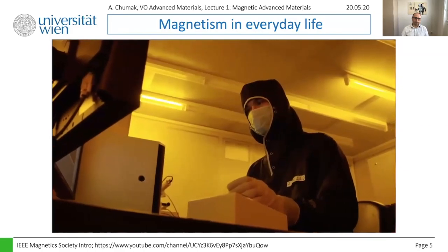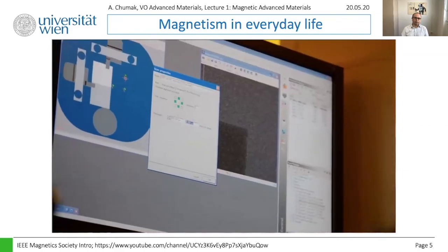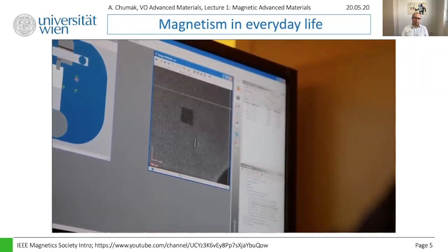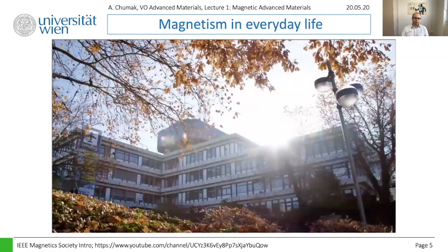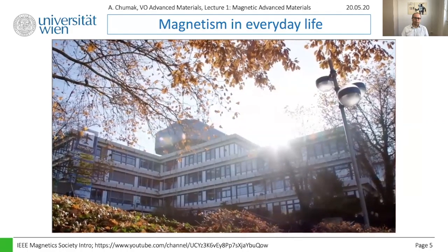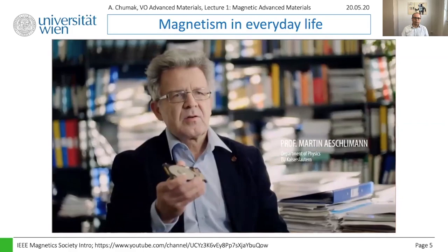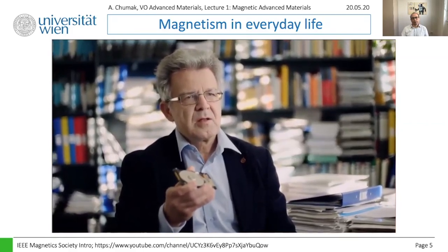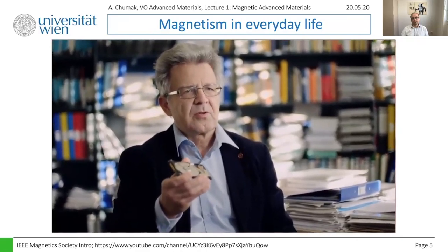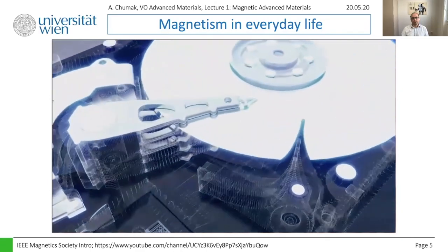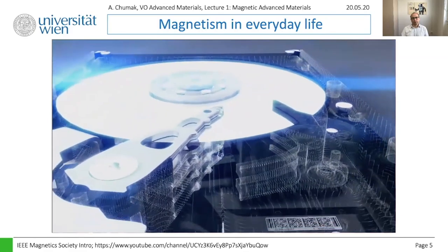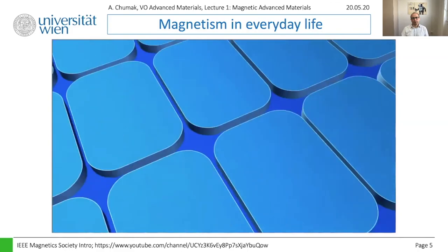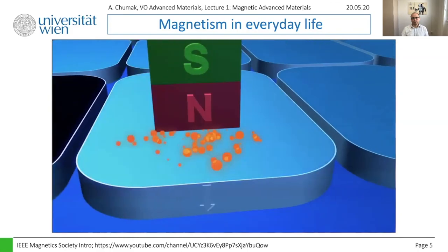Why do we need to make better, faster, and more efficient magnetic devices? Because we produce more than 11 trillion bytes per second all over the world. A hard disk stores emails, photos, movies, and cloud information. The basic idea to save one bit of information is simple: we use a magnetic domain which can be magnetized in two different directions.